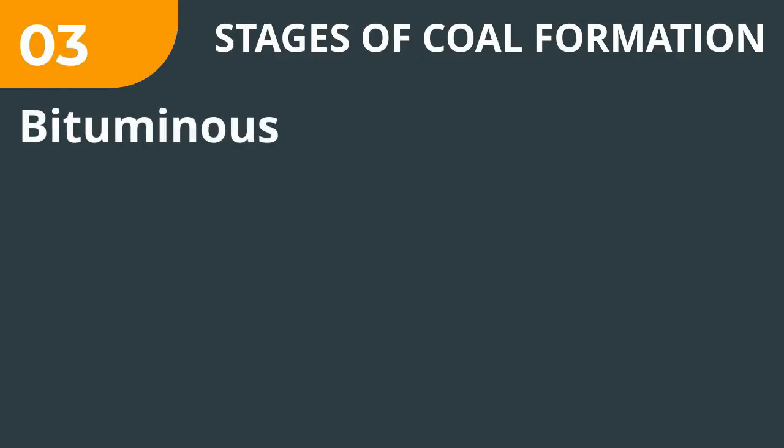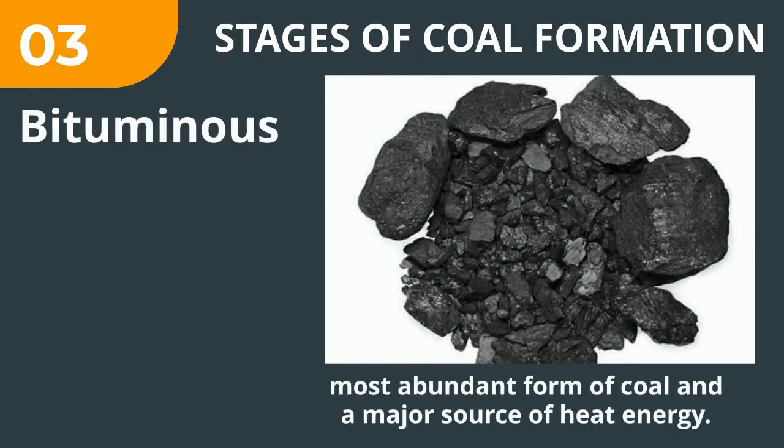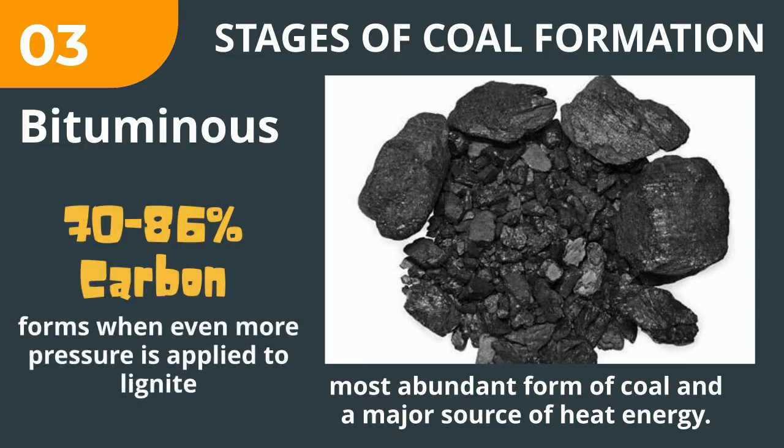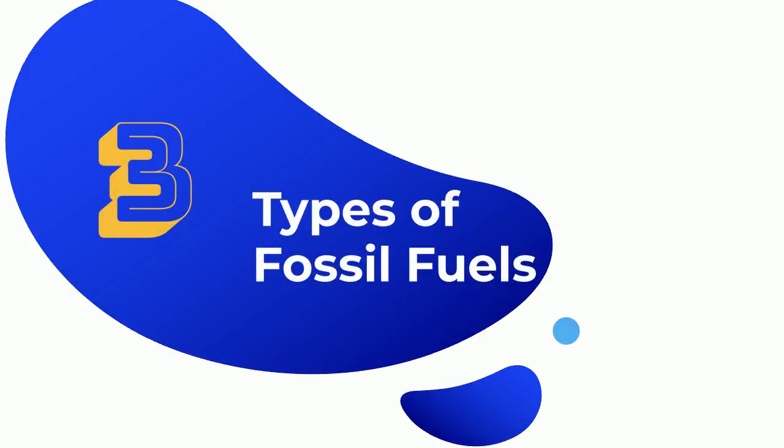Bituminous is the most abundant form of coal and a major source of heat energy. It contains 70–86% carbon and forms when even more pressure is applied to lignite. In this stage, no trace of plant materials is left. In the next succeeding videos, watch and understand how the types of fossil fuels are formed.